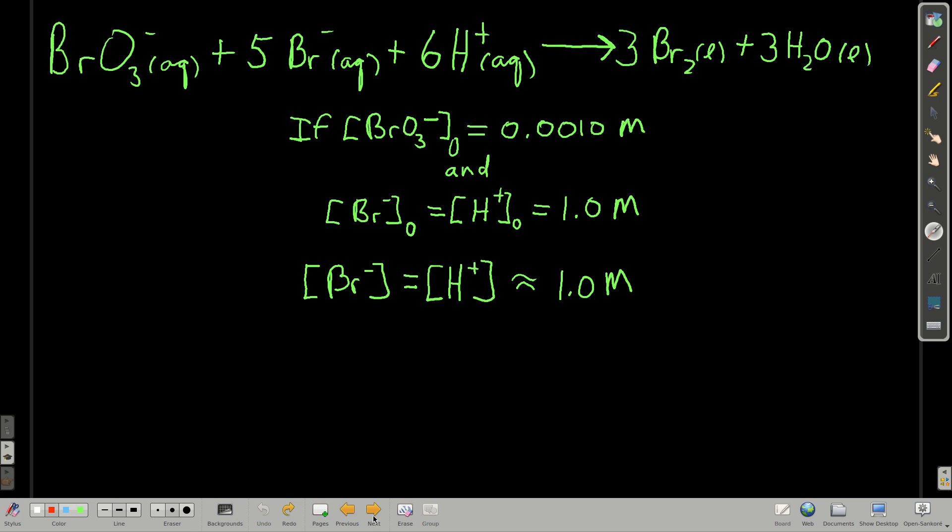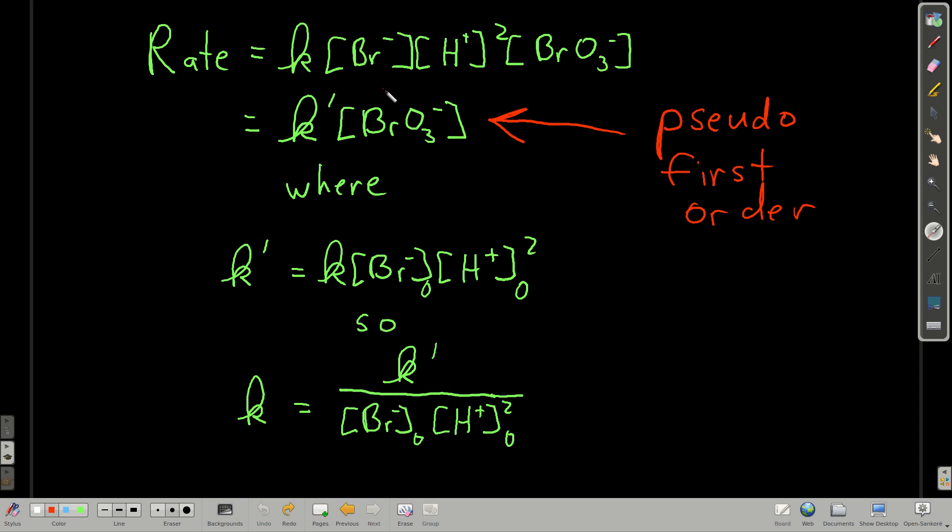Now if the concentrations are constant, when we look at the form of the rate law, so the rate's going to be K, concentration of bromate, concentration of hydrogen ion squared, concentration of bromide. This had to be determined experimentally, but that's the rate law.